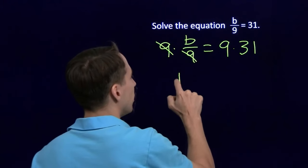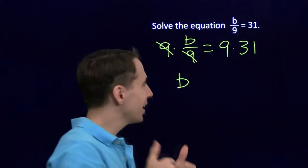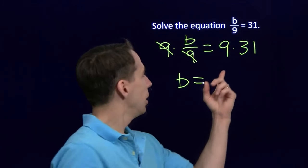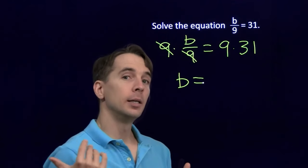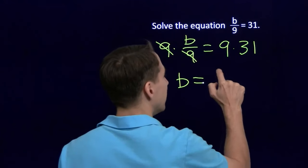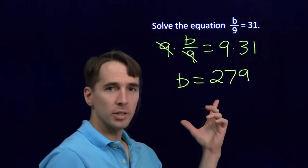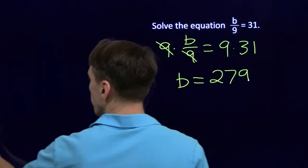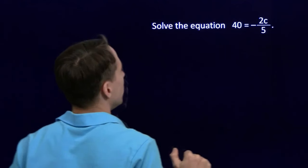These 9s will cancel out, leave our variable all by itself. That was the plan all along. And b is 9 times 31. 9 times 30 is 270. 9 times the 1 is another 9. And that gives us 279. And we're on to the final equation.